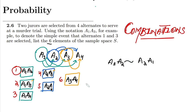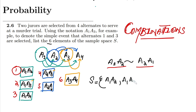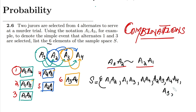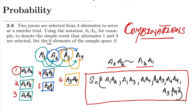Keep in mind that in combinations, order doesn't matter — a1 a2 means a2 a1 as well. So writing the full sample space: it is { a1 a2, a1 a3, a1 a4, a2 a3, a2 a4, a3 a4 }. That is the sample space for this question.